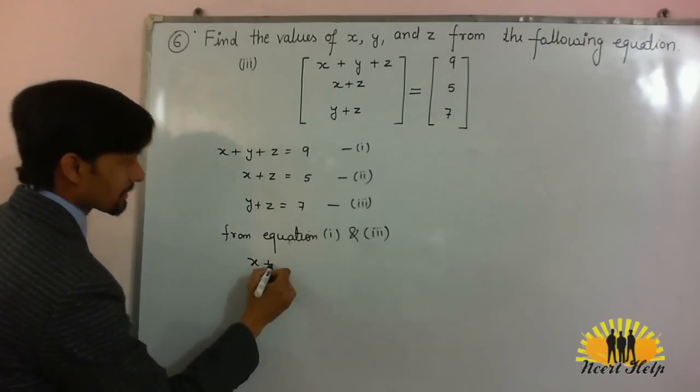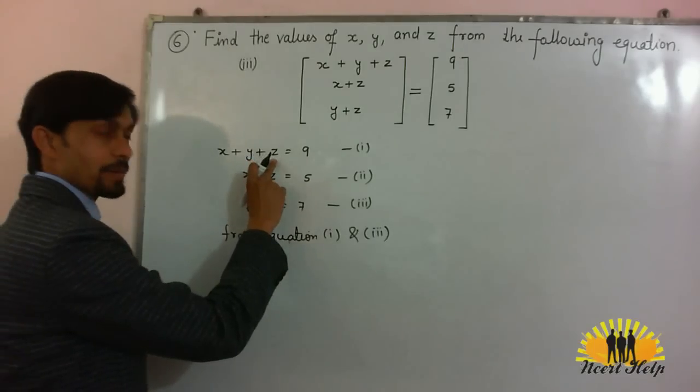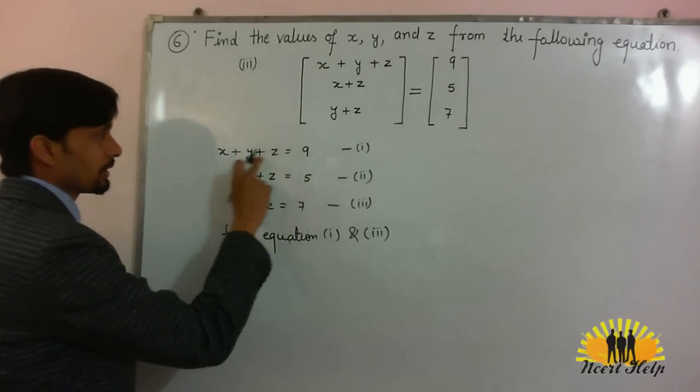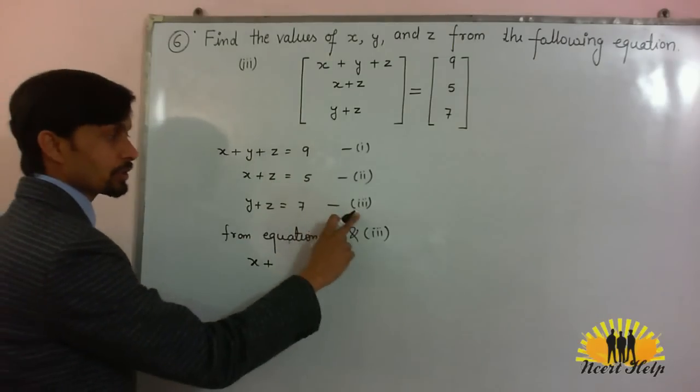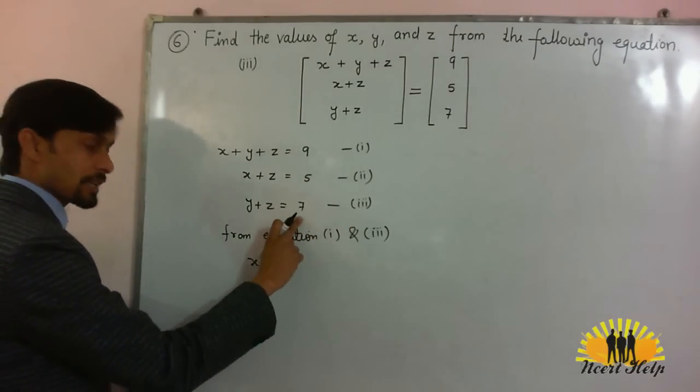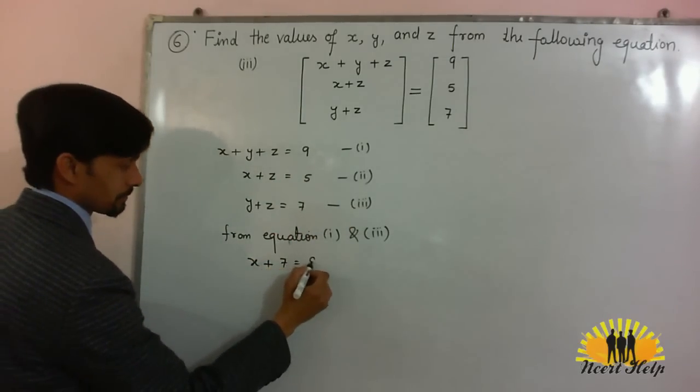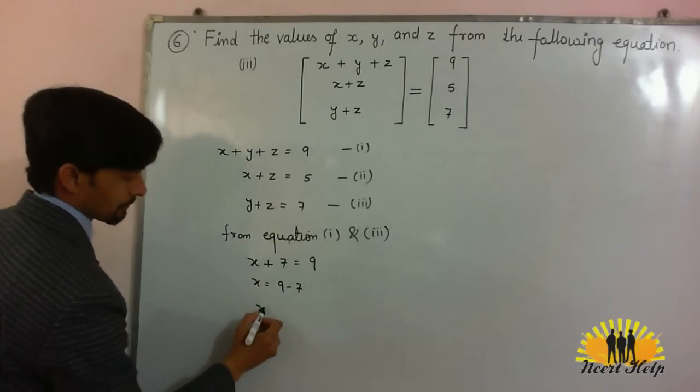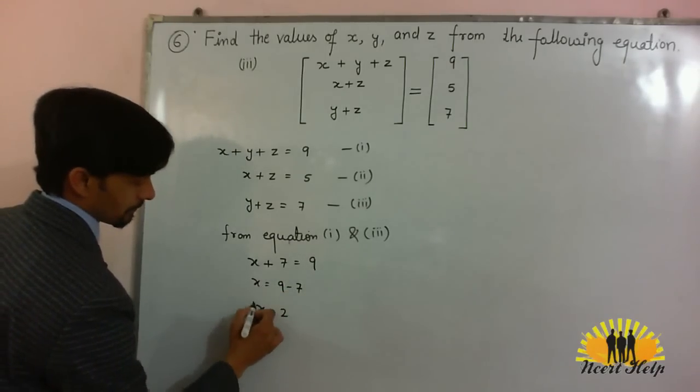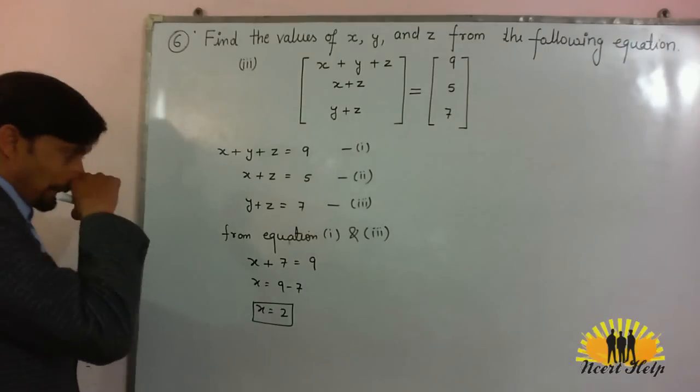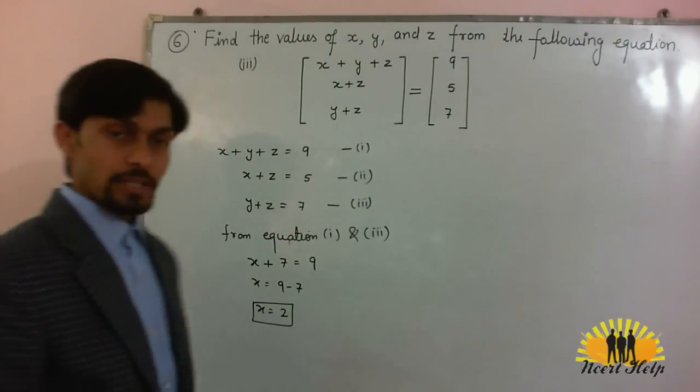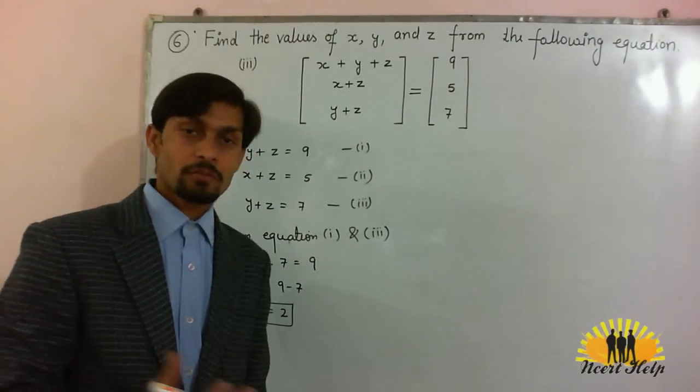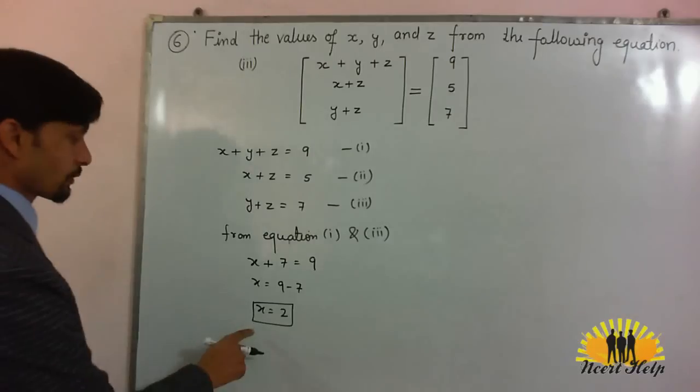So we get x plus x plus y plus z is equal to 9. And in place of y plus z, using equation third, we can write 7. So we have to find out the value of x. x is equal to 2.